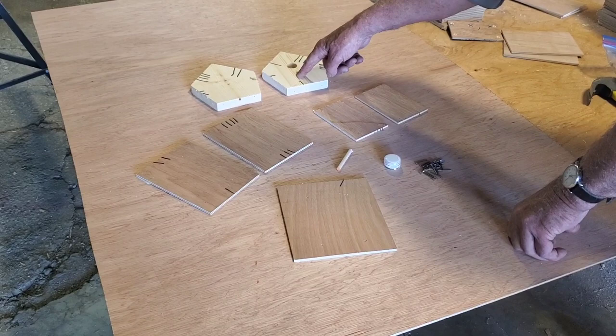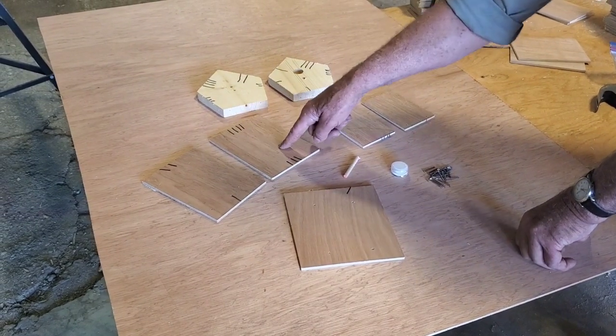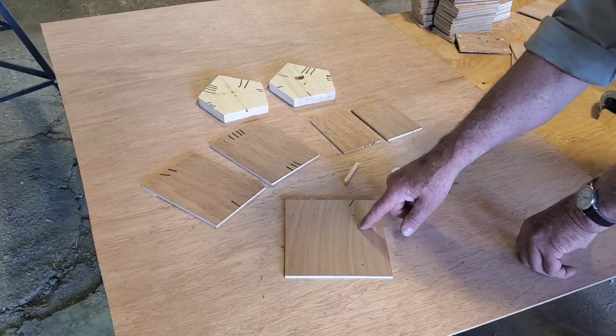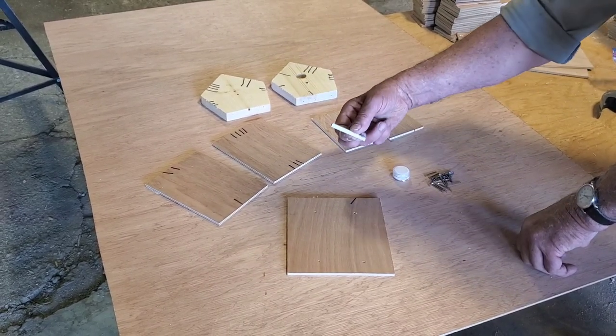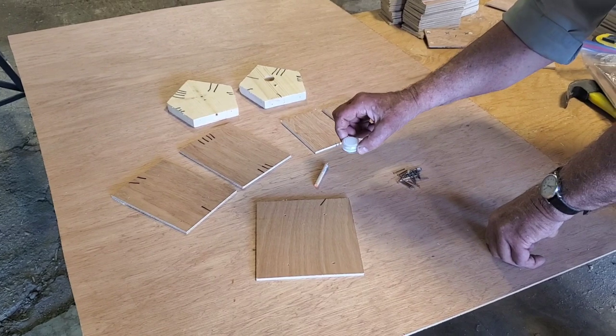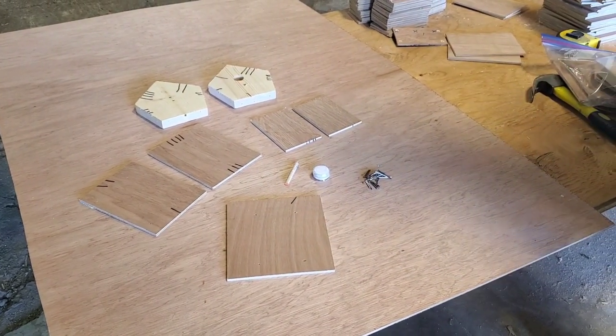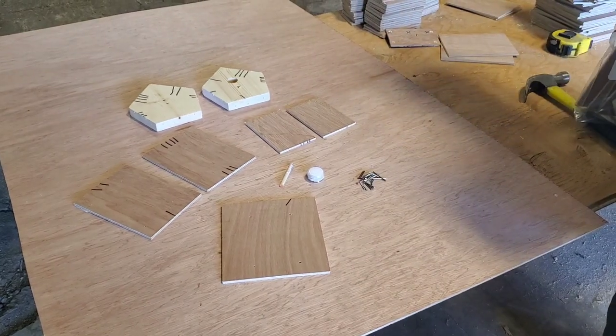Two end pieces, two roof pieces, two side pieces, a floor piece, a perch, a bottle of glue, and 25 nails, and a popsicle stick.